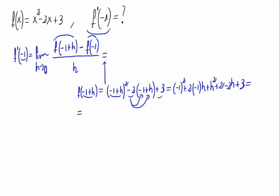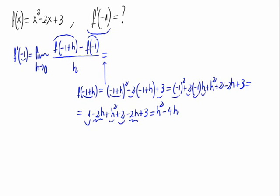This equals 1 minus 2h plus h squared plus 2 minus 2h plus 3, which simplifies to h squared minus 4h plus 6.